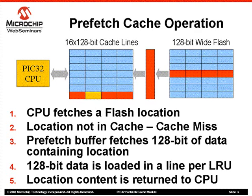The Cache Controller uses a least recently used algorithm to determine which cache line to use. Step 5, now that the requested location is in the cache, the Cache Module returns the content to the CPU. As the CPU is executing the previously returned instruction, the Prefetch Logic automatically fetches the next 128 bits of data from flash and keeps it ready in case the CPU needs it.